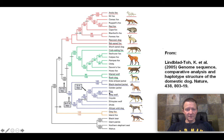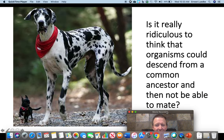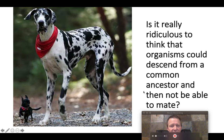Going back in time from dogs, eventually there is a point where dogs and gray wolves shared a common ancestor. Going back further, this would be the ancestor to dogs, gray wolves, and coyotes. Keep going back and eventually we come to a point where we can trace all canines back to one ancestor. Is it really so hard to think that organisms could descend from a common ancestor and then not be able to mate? Here we have a Great Dane and a Chihuahua — how well do you think mating would work between those two varieties?